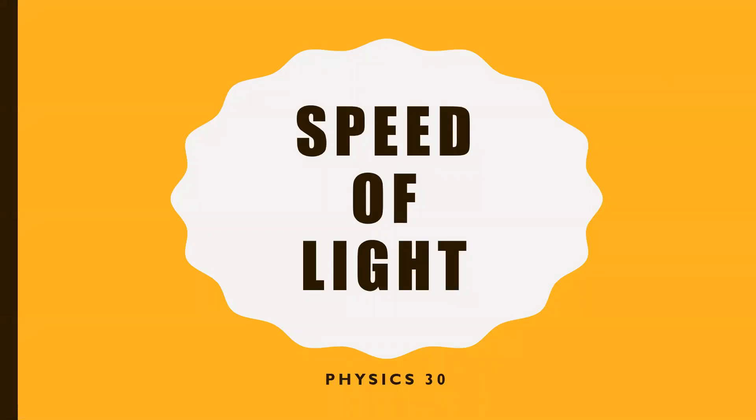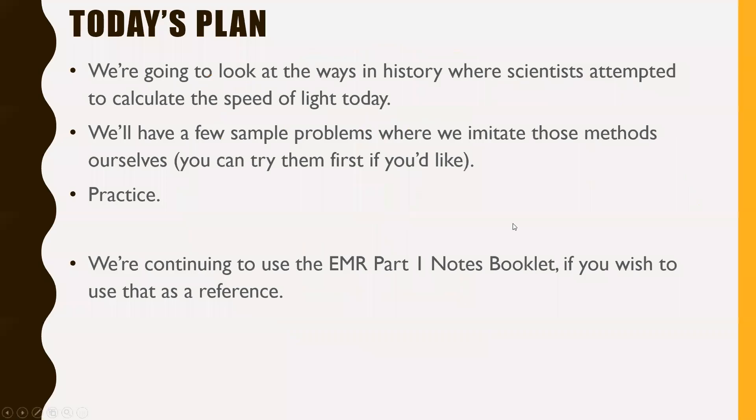Okay, so today's lesson is going to be a continuation of what we did last class on electromagnetic radiation. We're going to talk today about the speed of light and how it could be calculated. And of course, light is a form of electromagnetic radiation, so that is where we're connecting it.